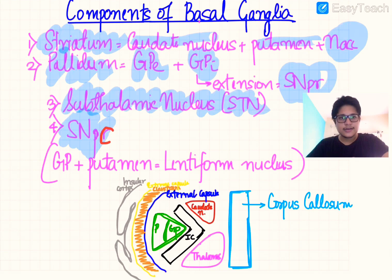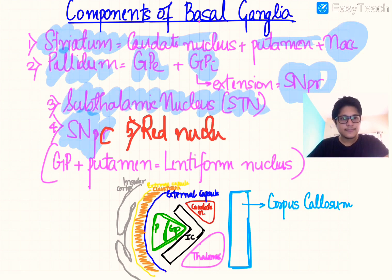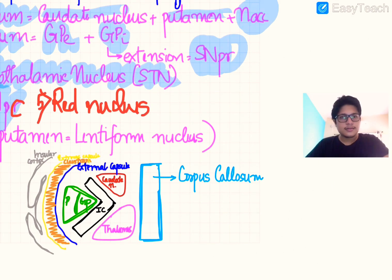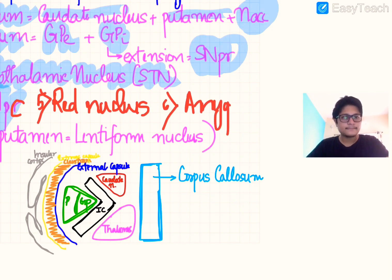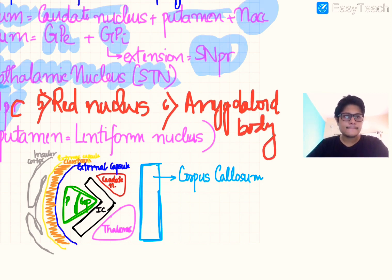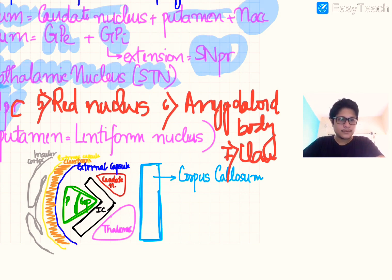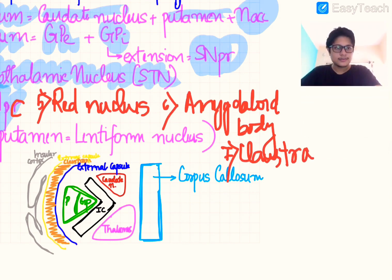In addition there are three more extra components: one is the red nucleus, next we have the amygdaloid body, and finally we have the claustrum.